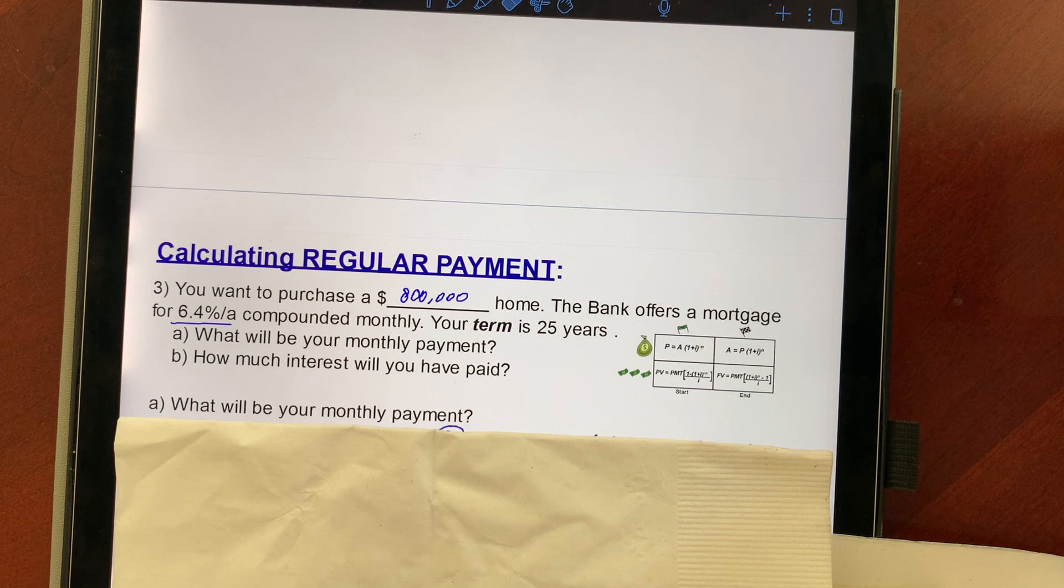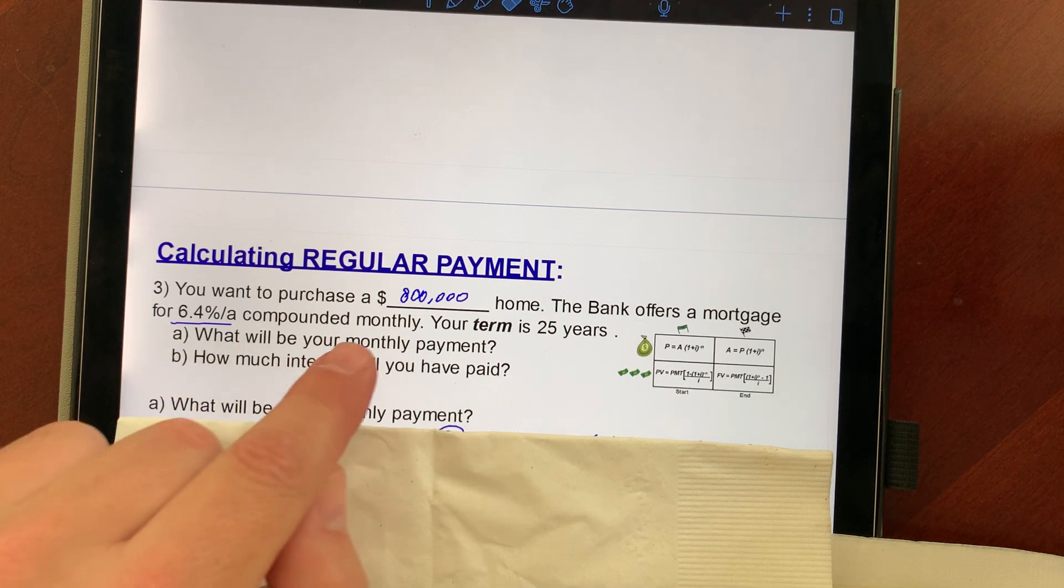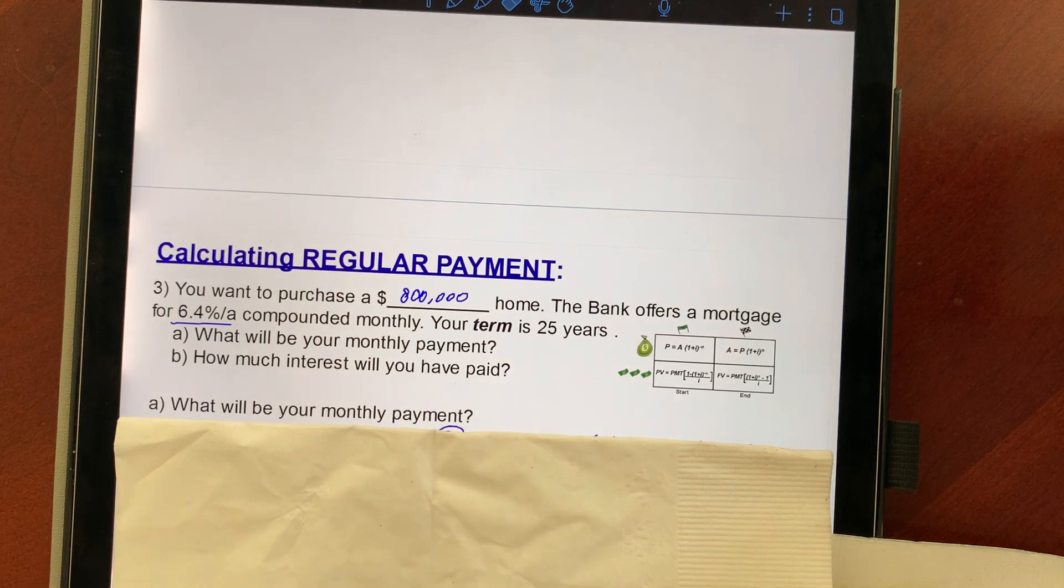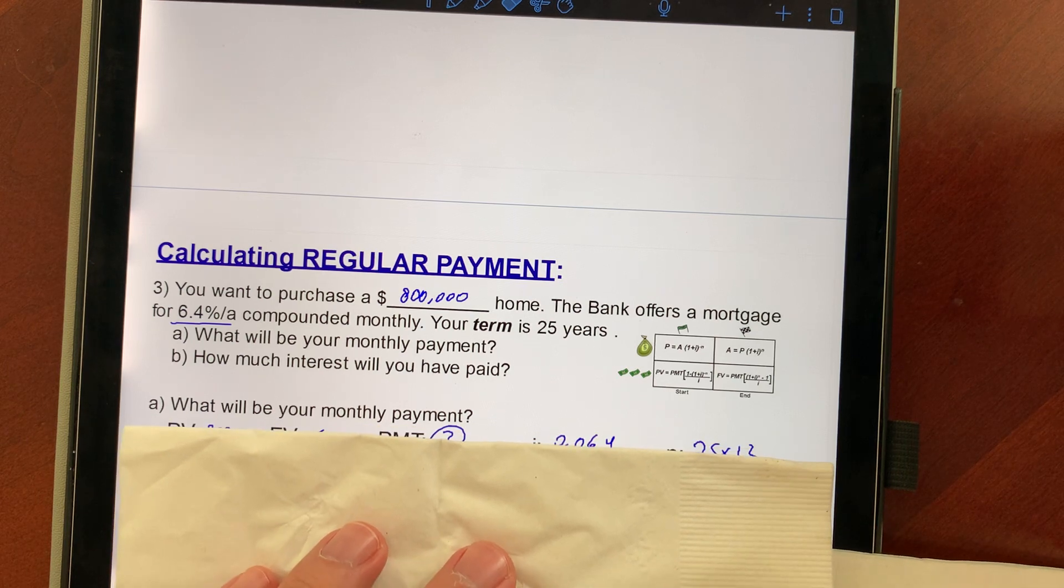So we're going to do a present value formula. The I is 0.064 divided by 12 because it's monthly again. And your term is 25 years. How many months are there in 25 years? I think the answer is 300.